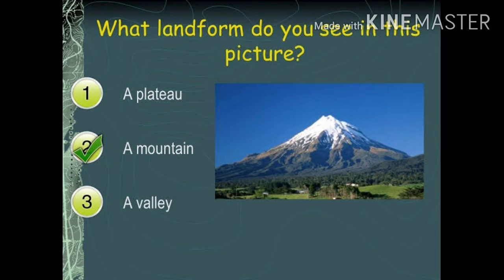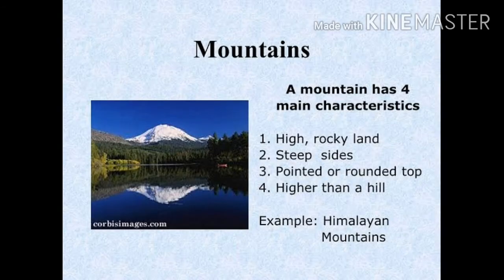Now, what land form can you see here? It's a mountain. Mountains have four main characteristics: they are high and rocky, they have steep sides, then pointed and rounded tops. Hills are smaller than mountains. For example, from India, the Himalayan mountain.